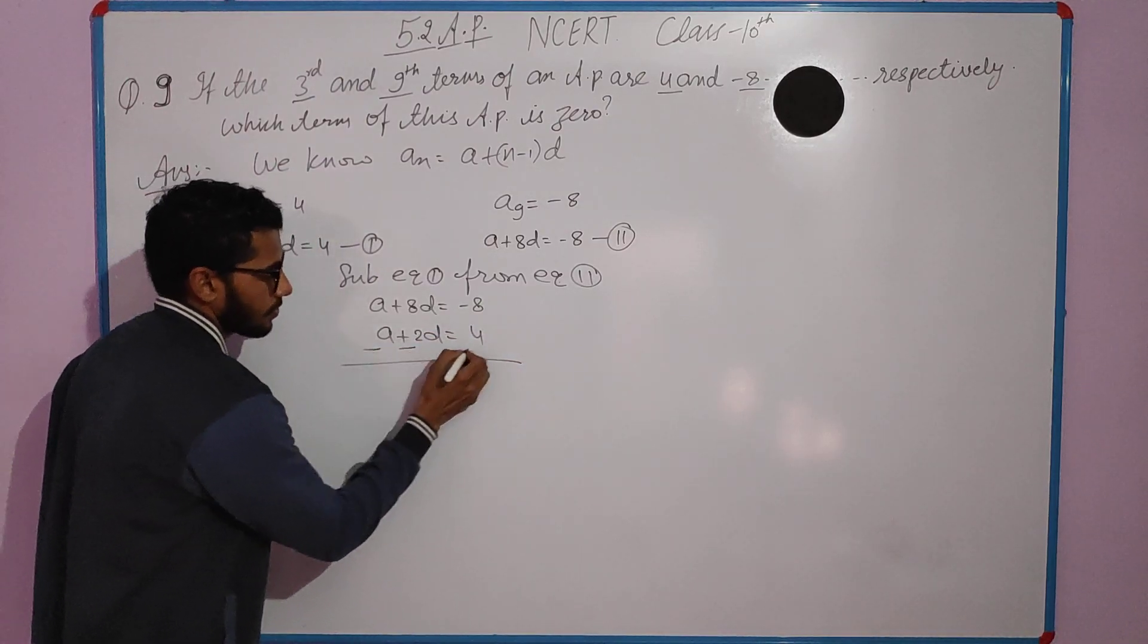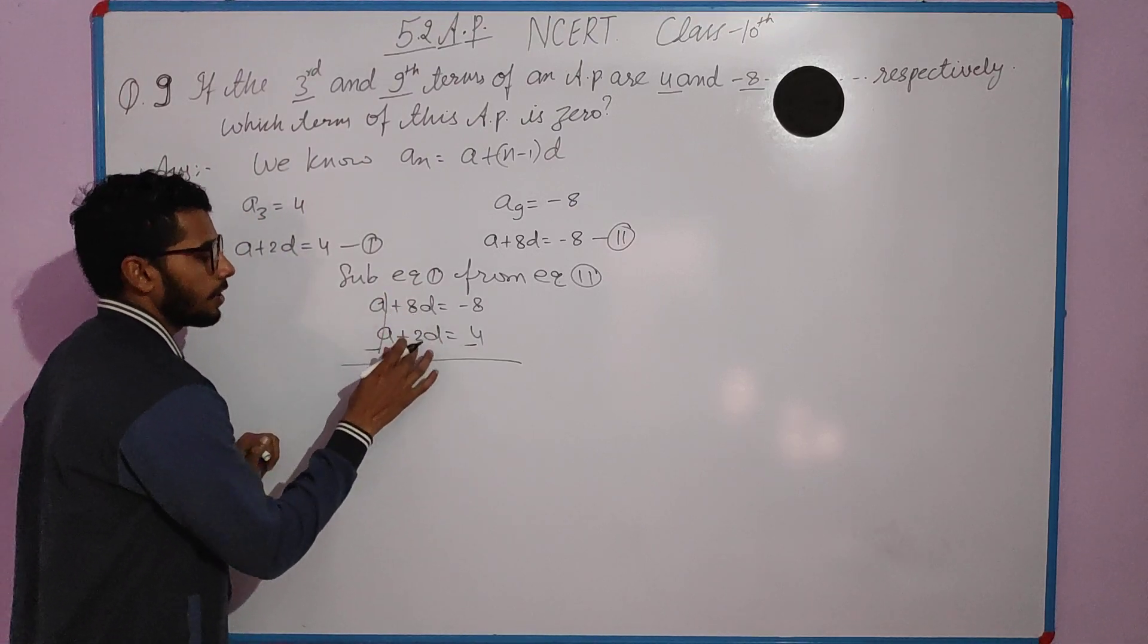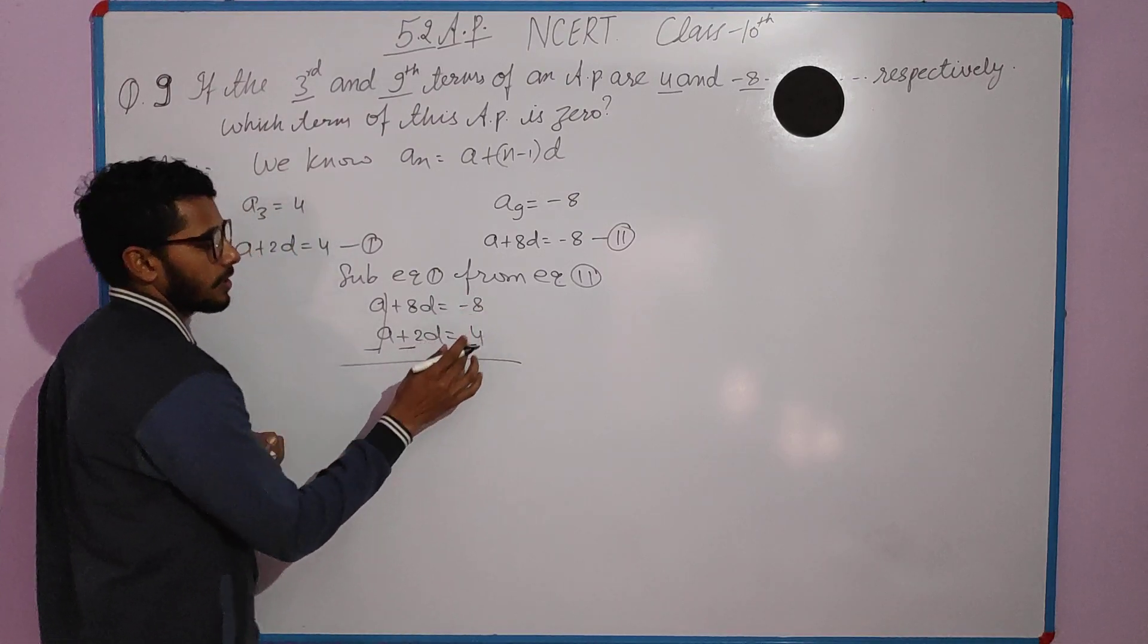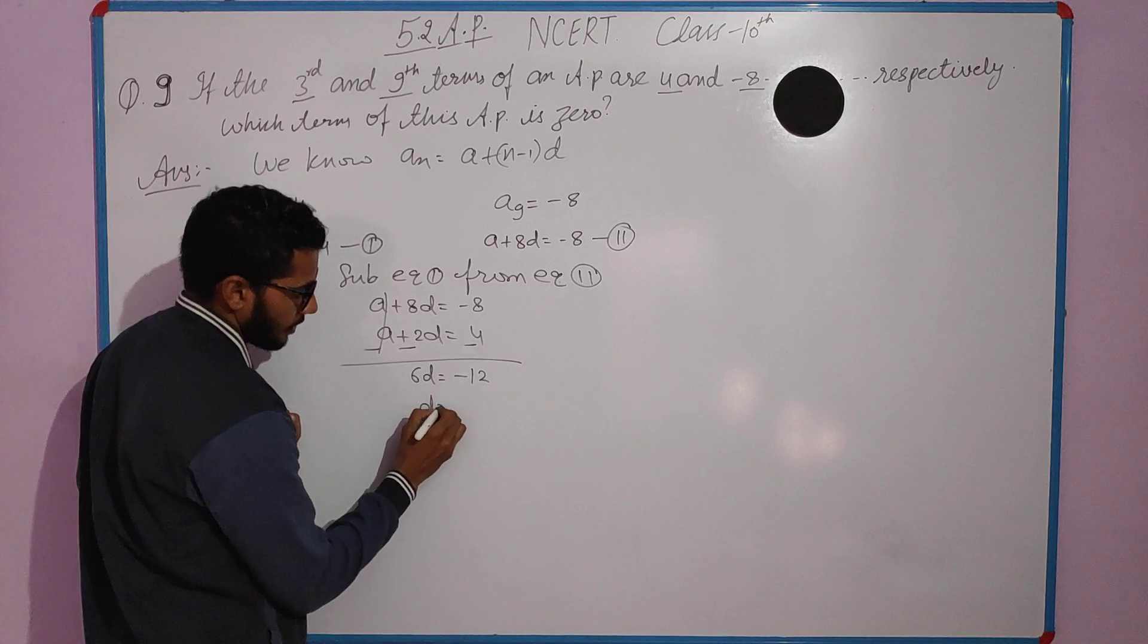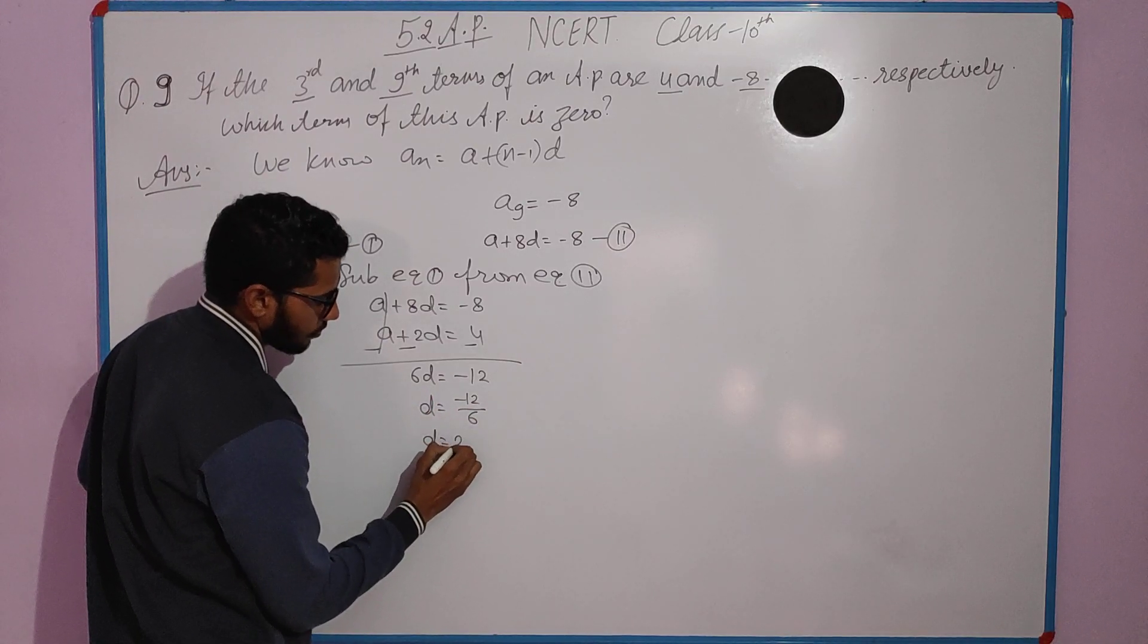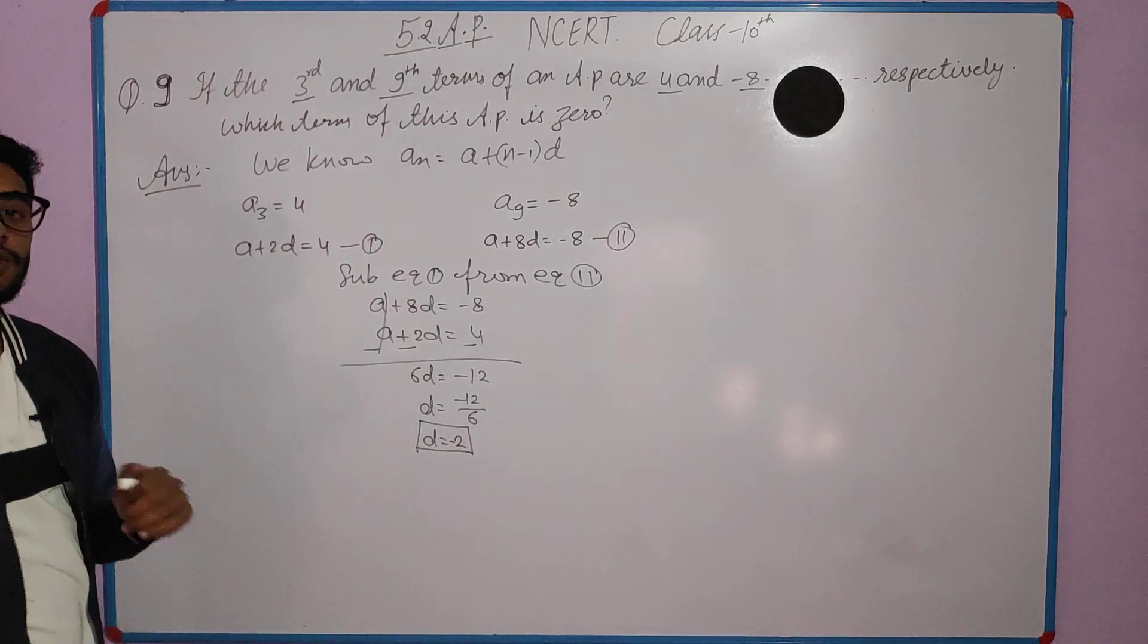When we subtract, the sign changes. Plus a minus a gets cancelled, 8d minus 2d is 6d, and minus 8 minus 4 is minus 12. So d equals minus 12 over 6, which gives d equals minus 2.